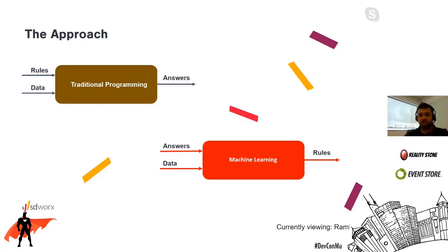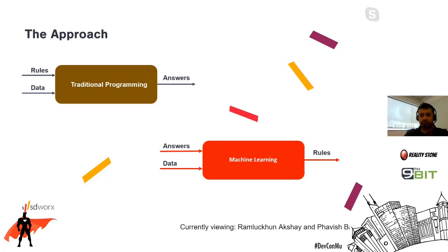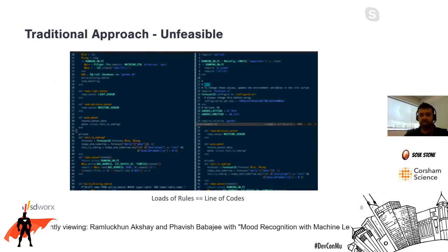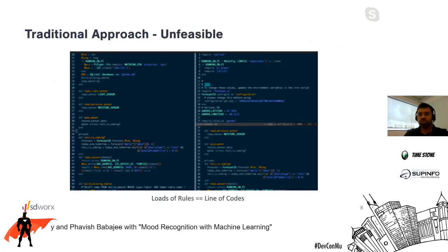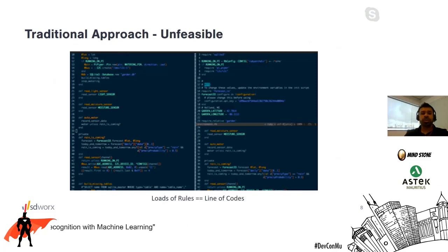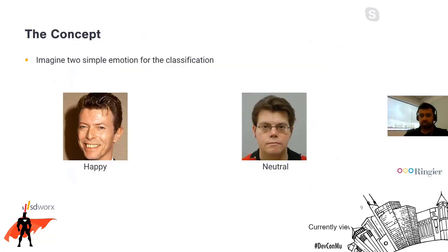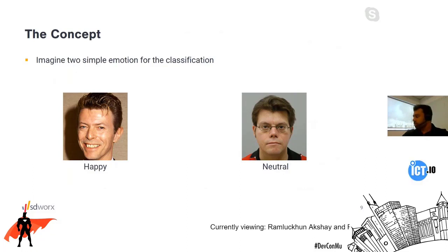The reason we bring the new approach is quite simple: the more rules you put in, the more logic, and the more logic brings more lines of code. That's the simple reason behind why we moved from the traditional approach to the new machine learning approach. Now let's drill down a bit more towards what we have done within mood recognition itself.